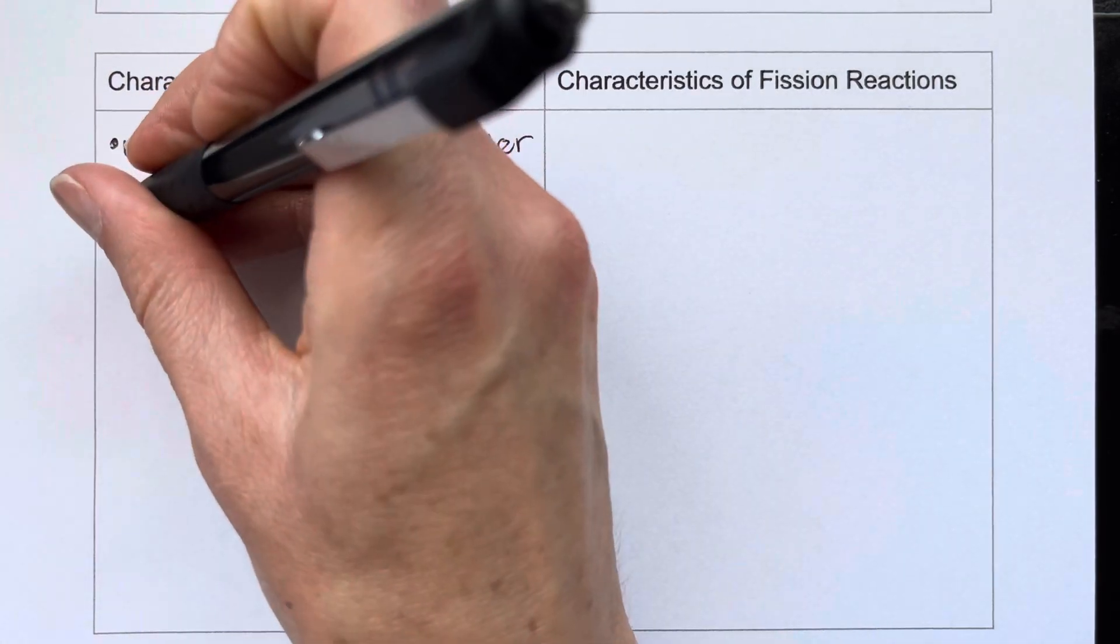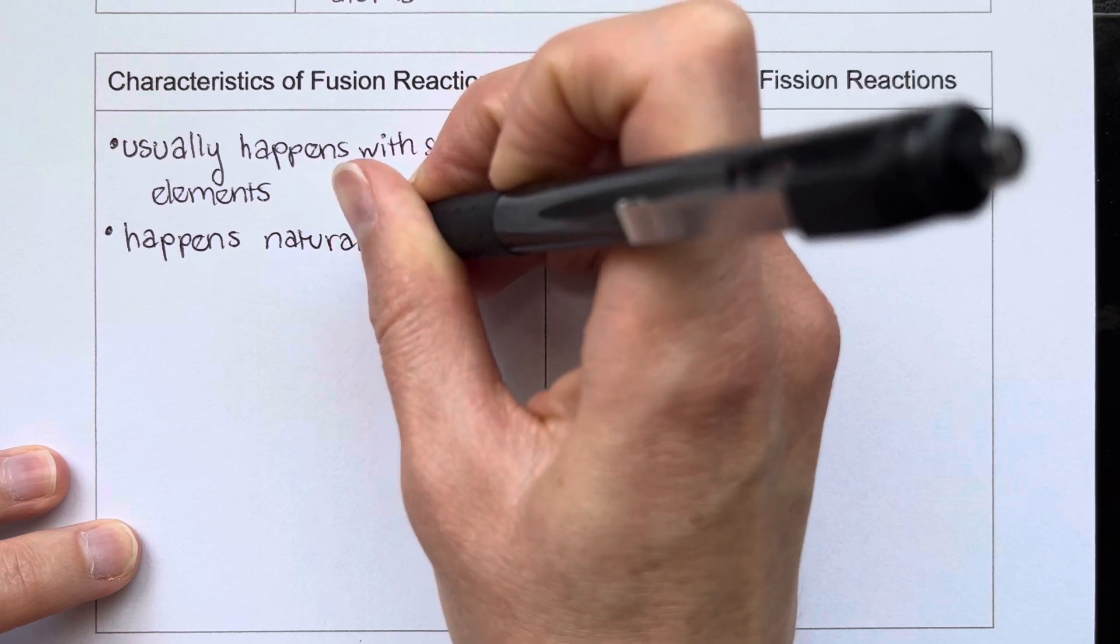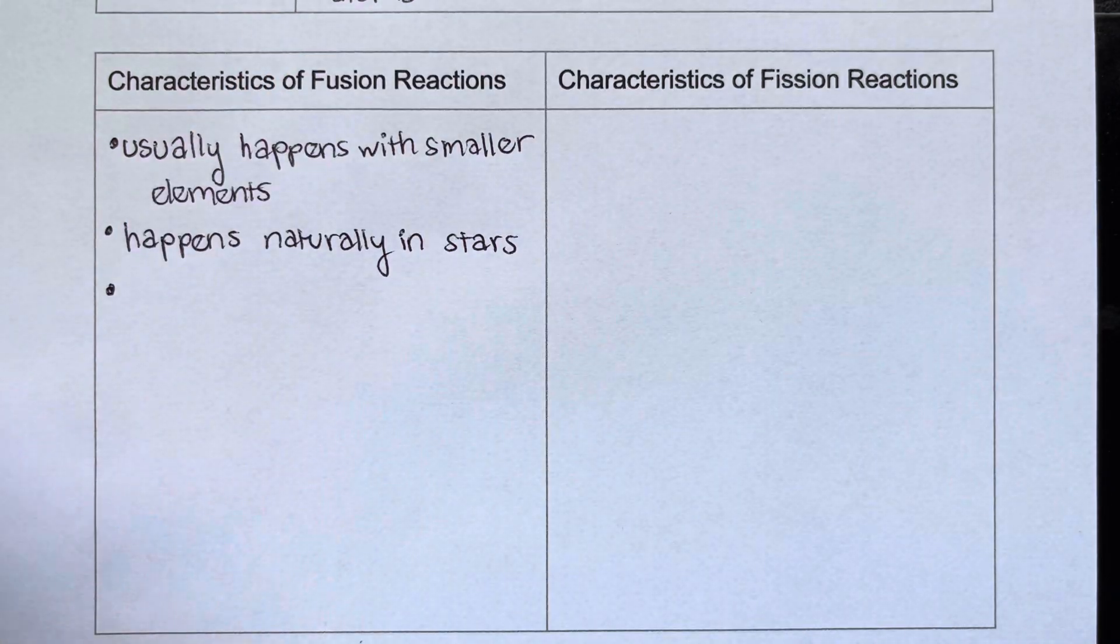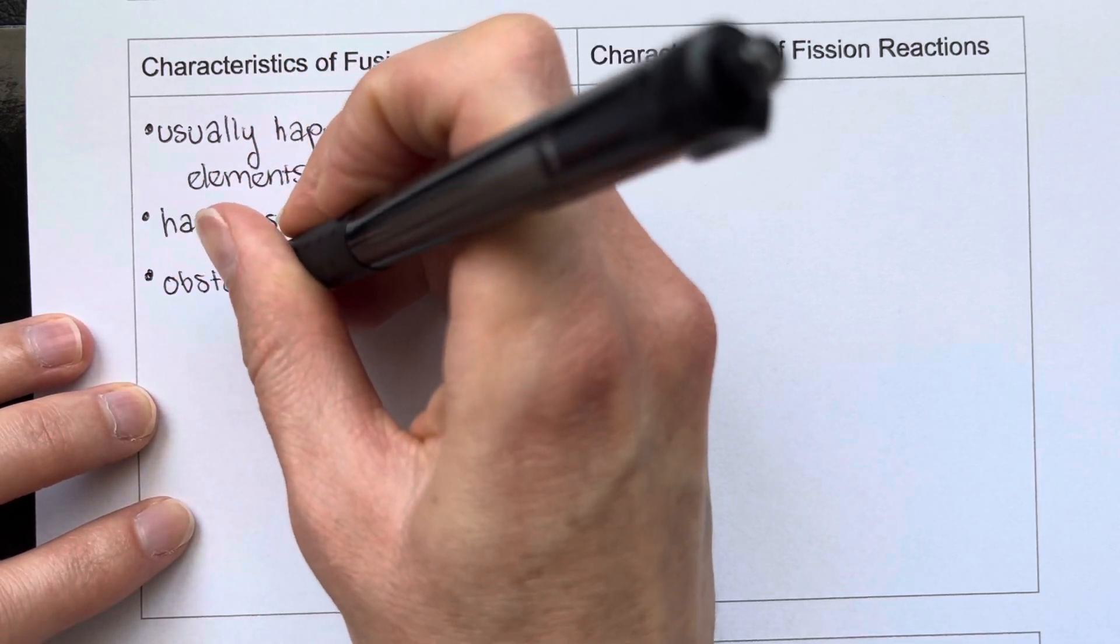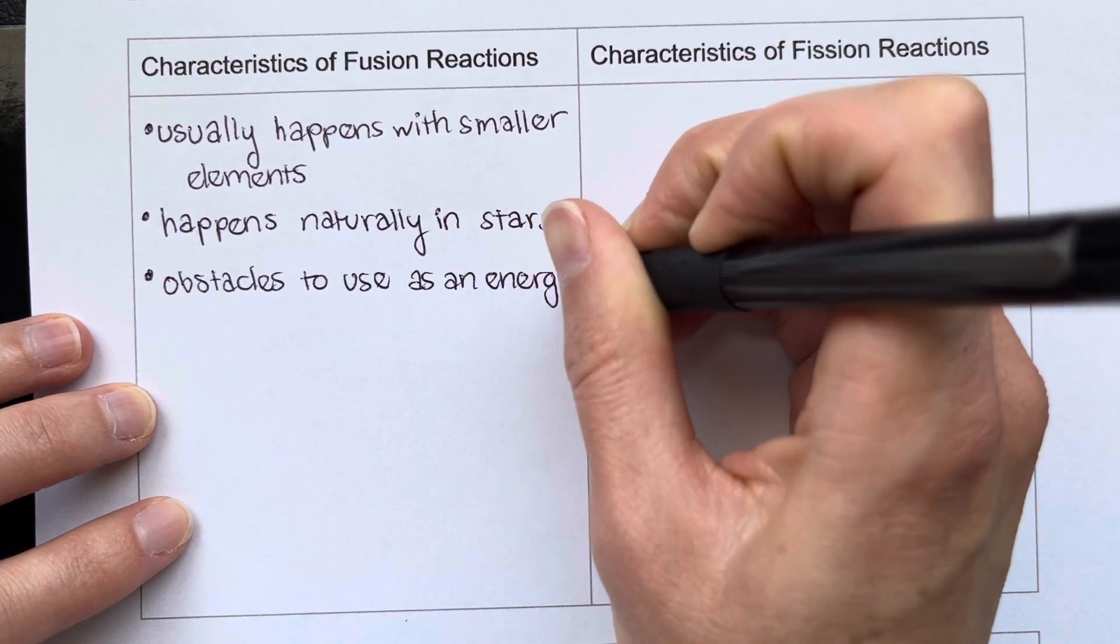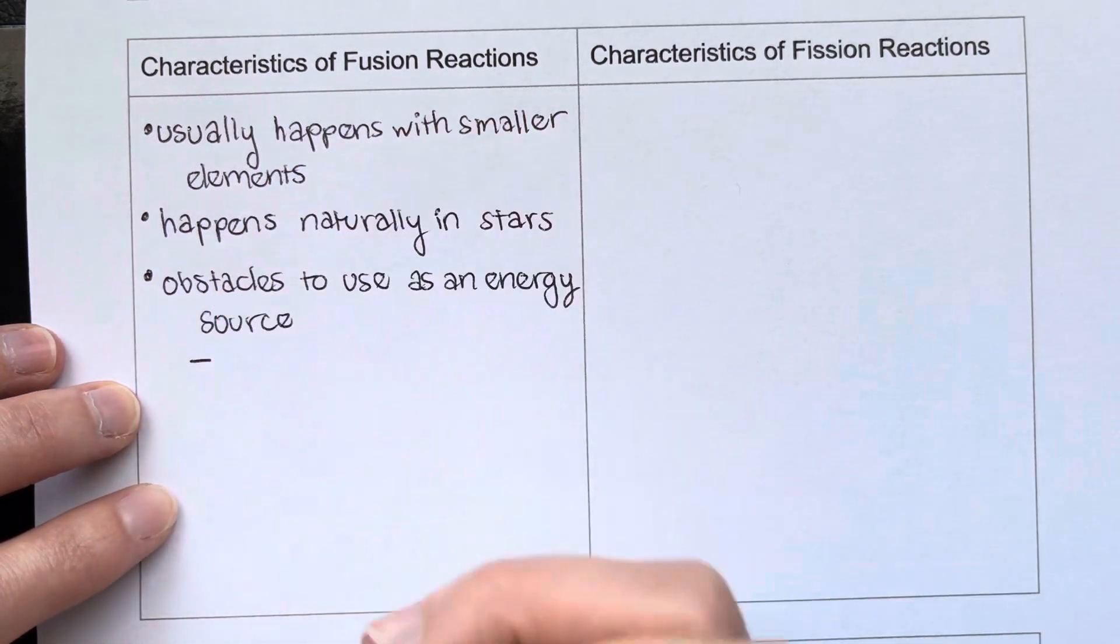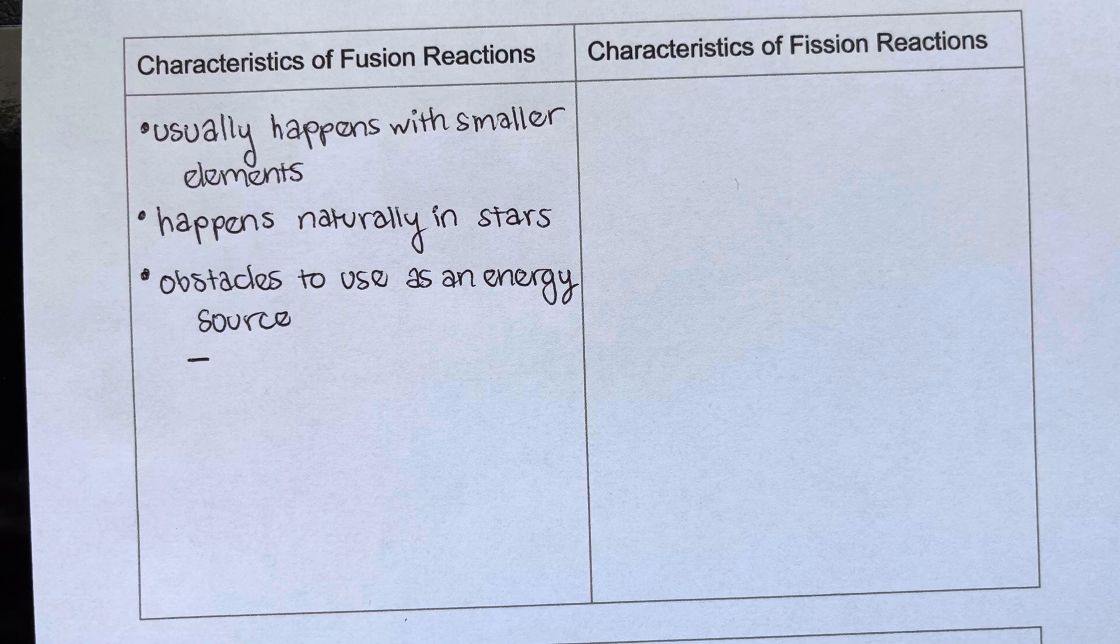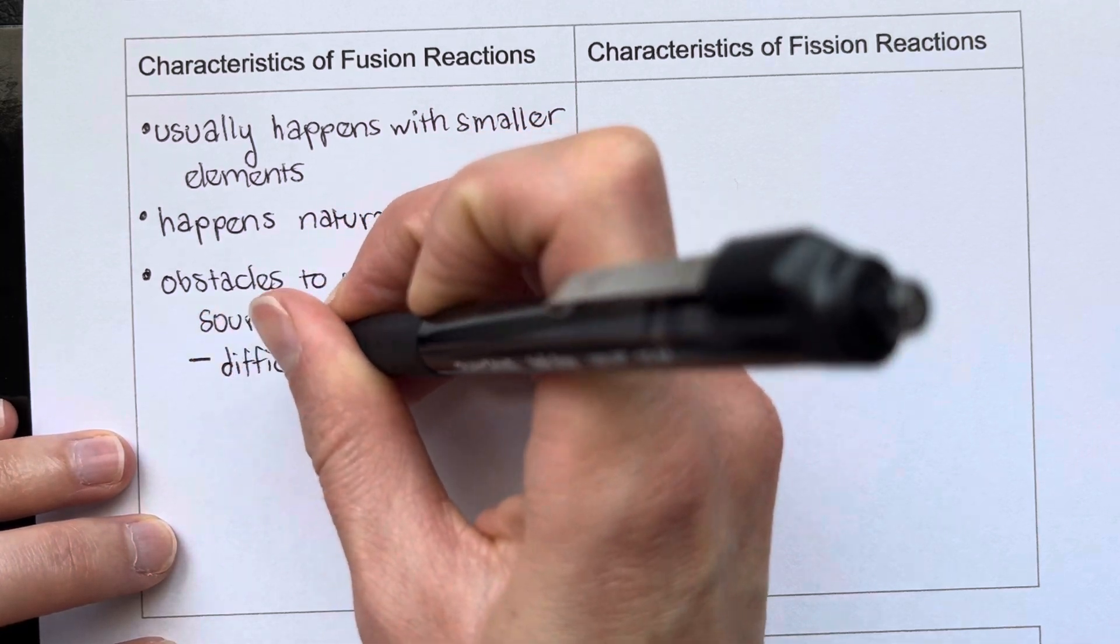We already mentioned this fusion happens naturally in the stars, including our sun. We want to mention a couple of obstacles to using this for energy for our planet. So the obstacles to us using this as an energy source are first of all, it's really, really hard to get the energy and heat that is necessary to create fusion. Like you almost need to create basically a small star and stars are really, really hot. So it is difficult to generate the heat that is necessary to do this.